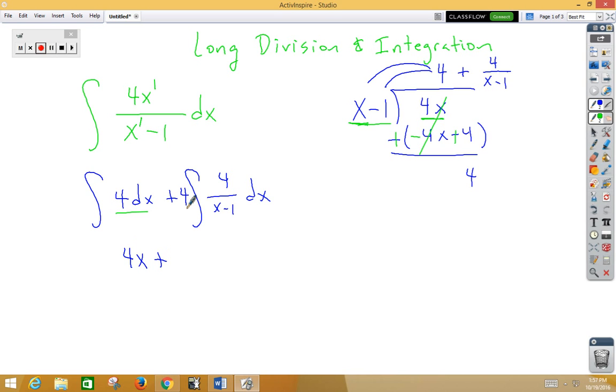If we integrate 4, we get 4x. Over here on the right side, if I push out the 4, then I would have a u sub of u is x minus 1, du is dx, and I've got a dx. So this becomes 4 integral of 1 over u du, which is of course natural log. So we get 4 natural log absolute value x minus 1 plus c.